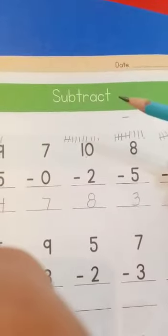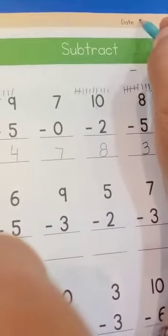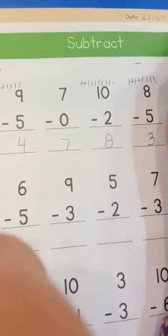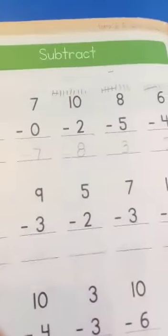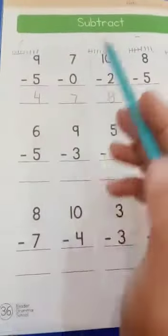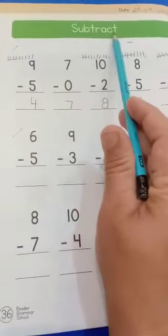Class, this is your math period. Open your page number 36. Write down the date on it. Today's date is 20-04-2021. Today we will do this part, from this to this. Again, subtraction. Subtraction means cut, cutting away.